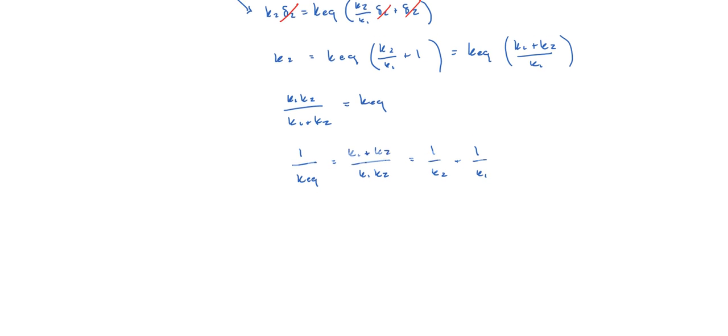And that's it. Let's reorder our terms, so we have 1 over Keq is equal to 1 over K1 plus 1 over K2.